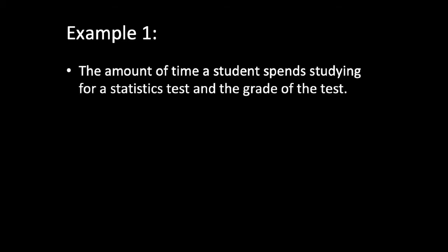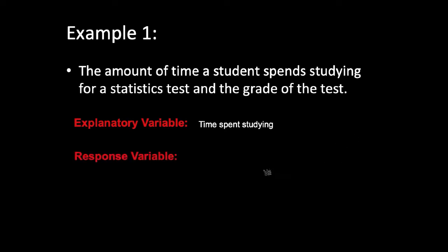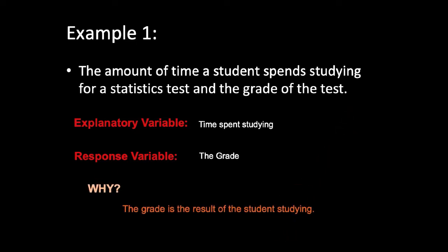Let me explain these two using some examples. Example one: the amount of time a student spends studying for a statistics test and the grade of the test. If you study a lot you can make a better grade. Therefore, grade is the outcome, so the explanatory variable is the study time and the response variable is the grade.